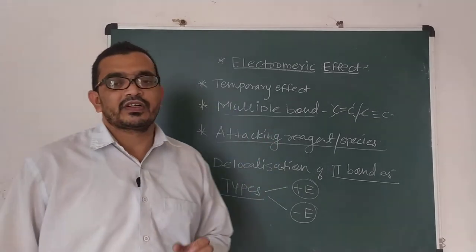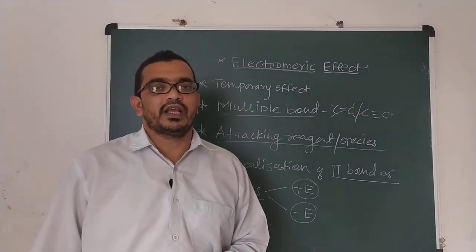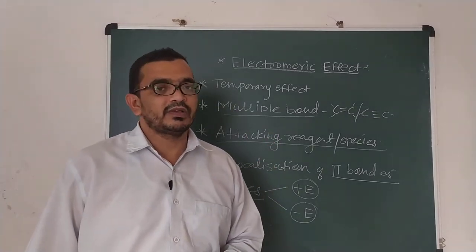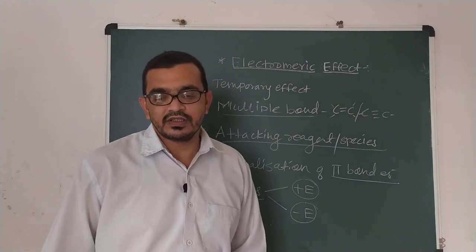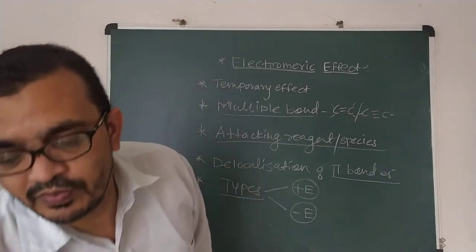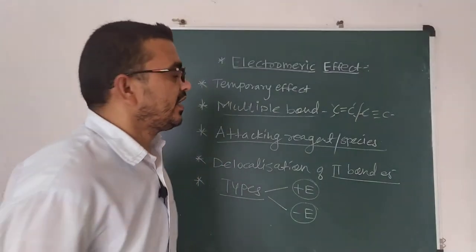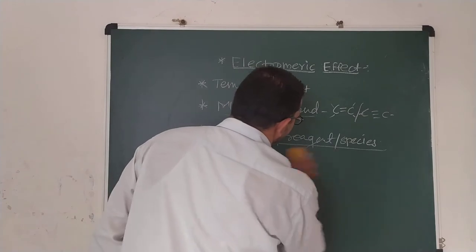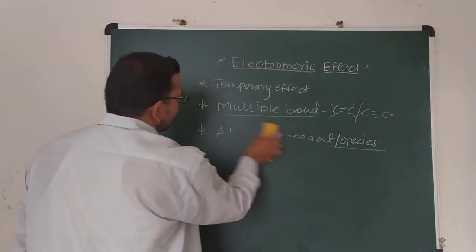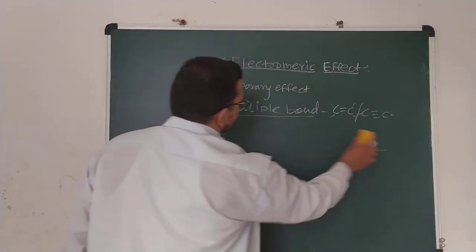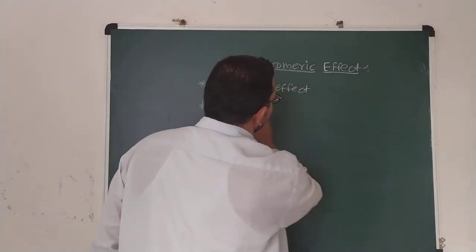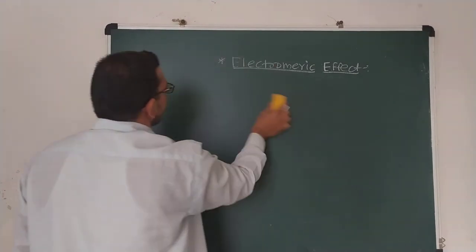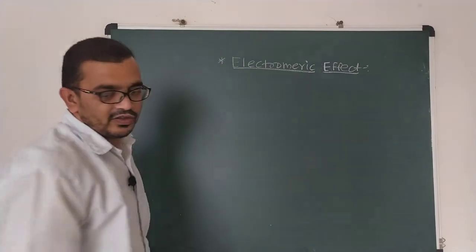Now let us see the examples of the electromeric effect. This is a very important discussion, students. We are now going to discuss the examples of the electromeric effect to understand how this effect actually occurs in practice.